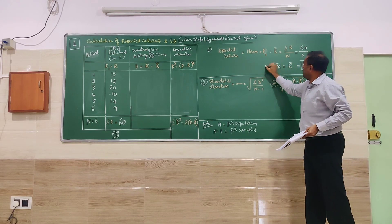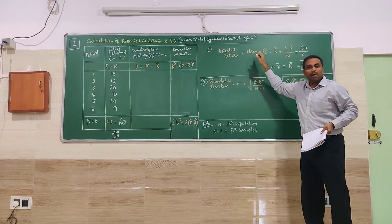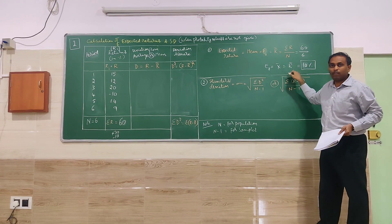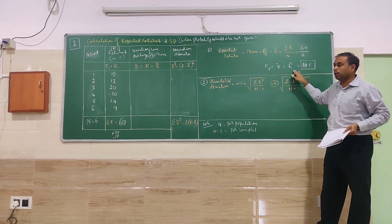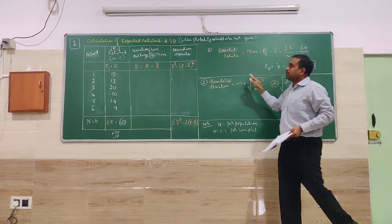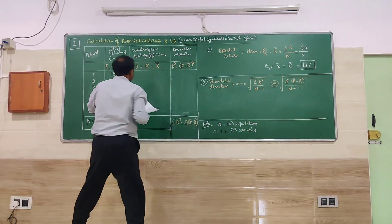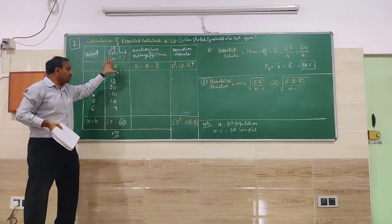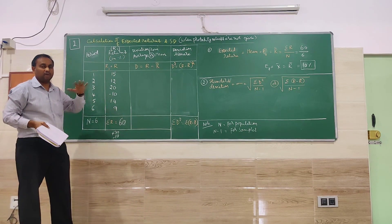60 is the total returns, 6 is the number of years. We get expected return as 10. So expected return, mean, R bar, all are same, different denotations. It is 10. So we go for calculating the deviation from the average. So how much variation is there in the return? Is it constant, it is not constant. We are going to find out therein.